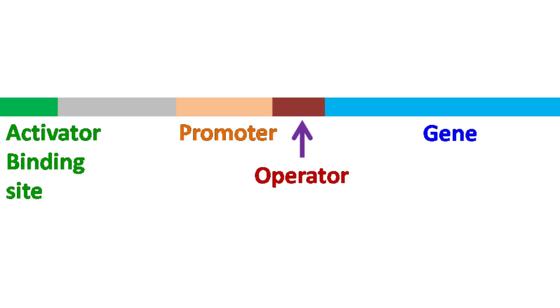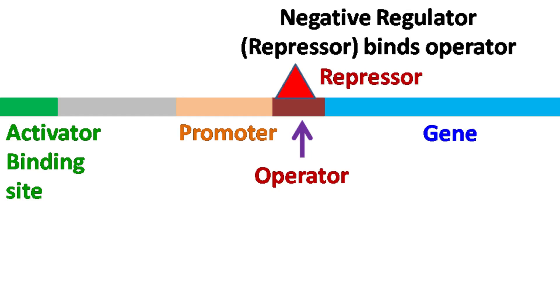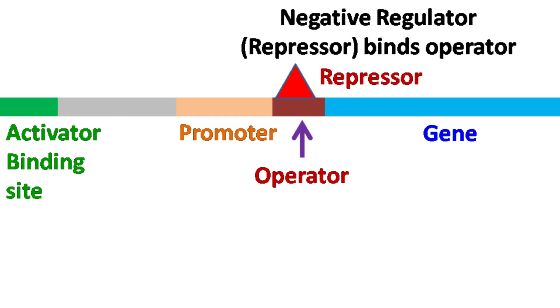The DNA sequence at which the repressor binds is called an operator, while the DNA sequence at which the activator binds is called an activator binding site.